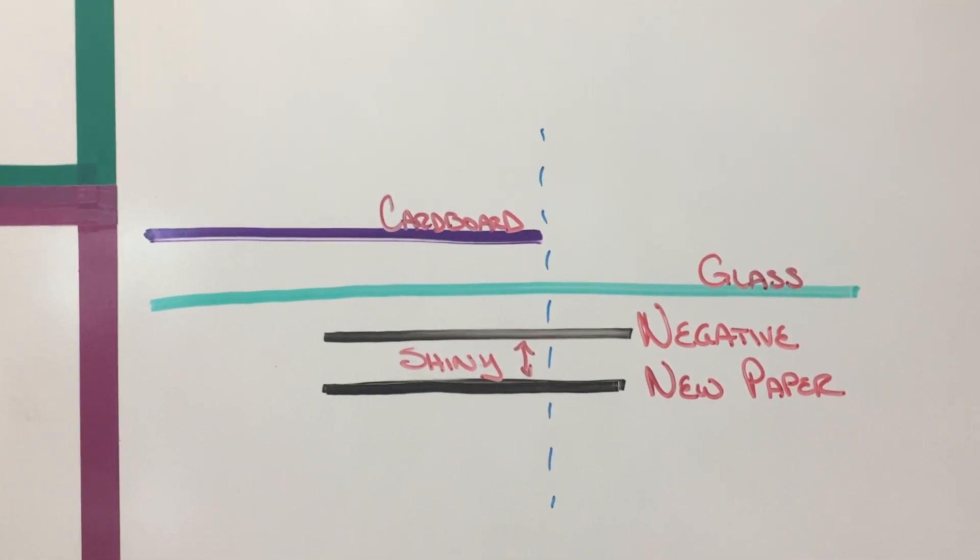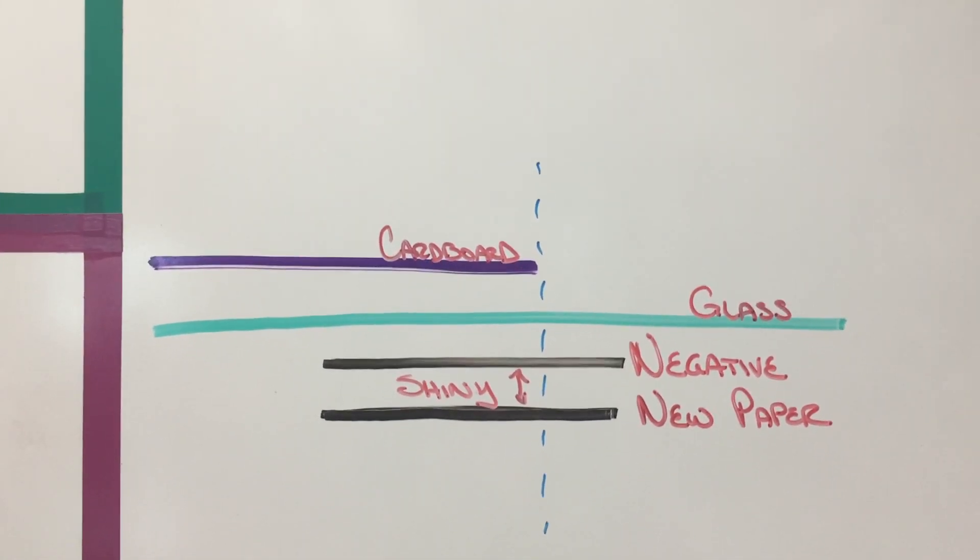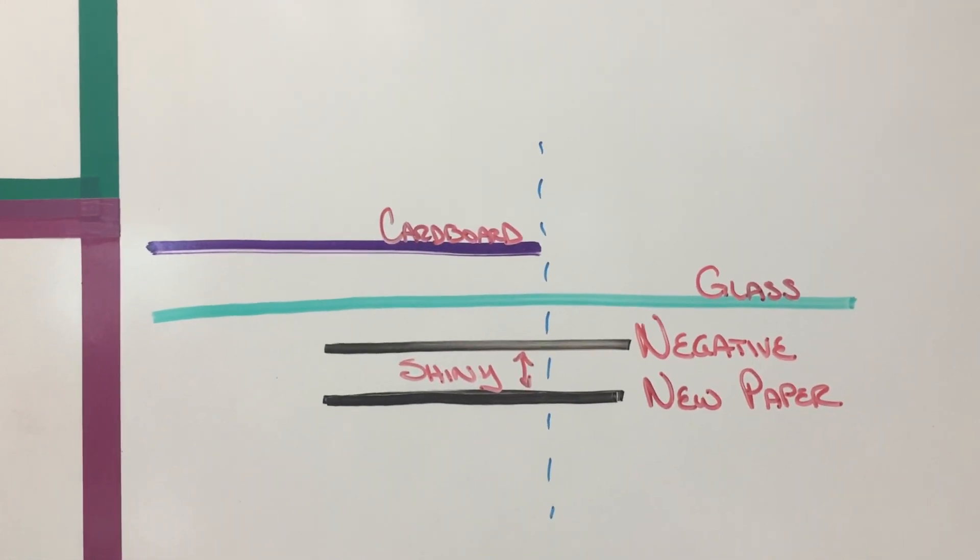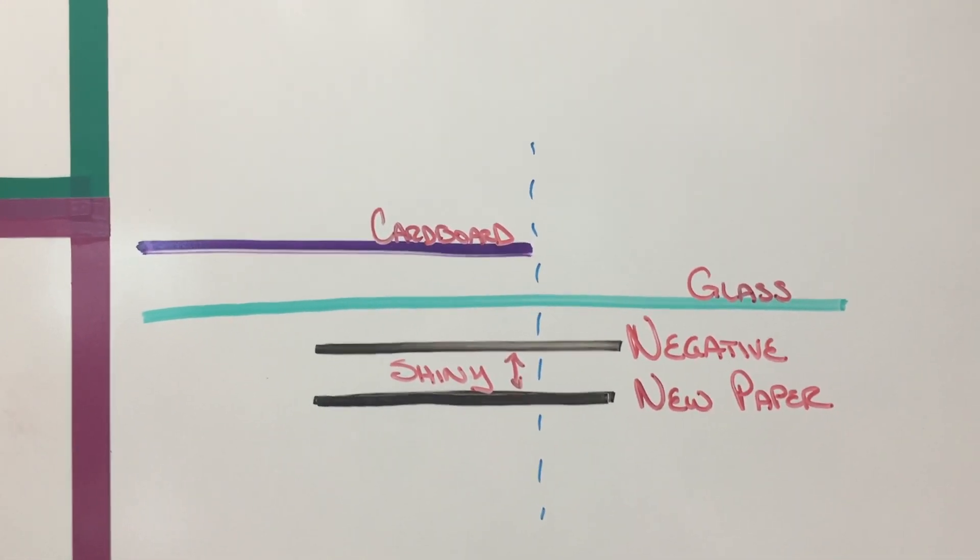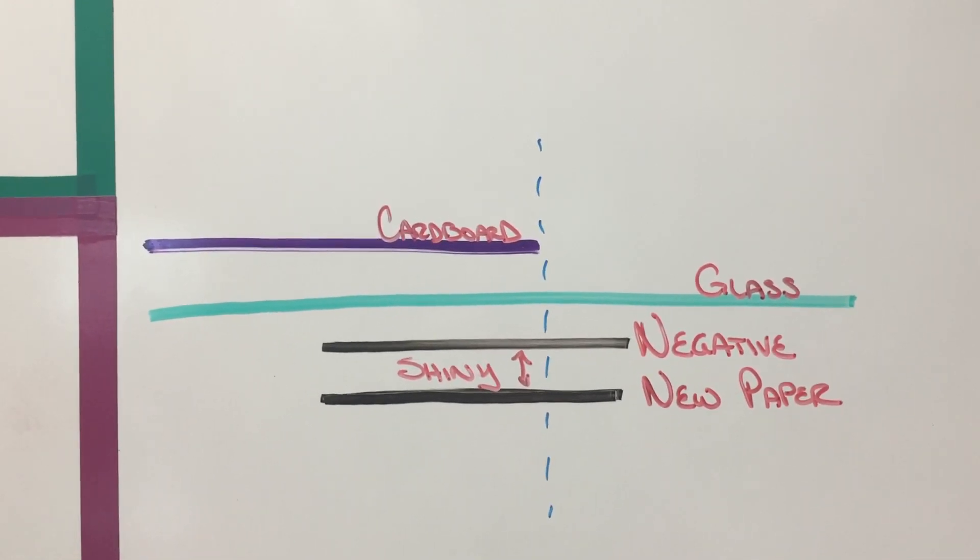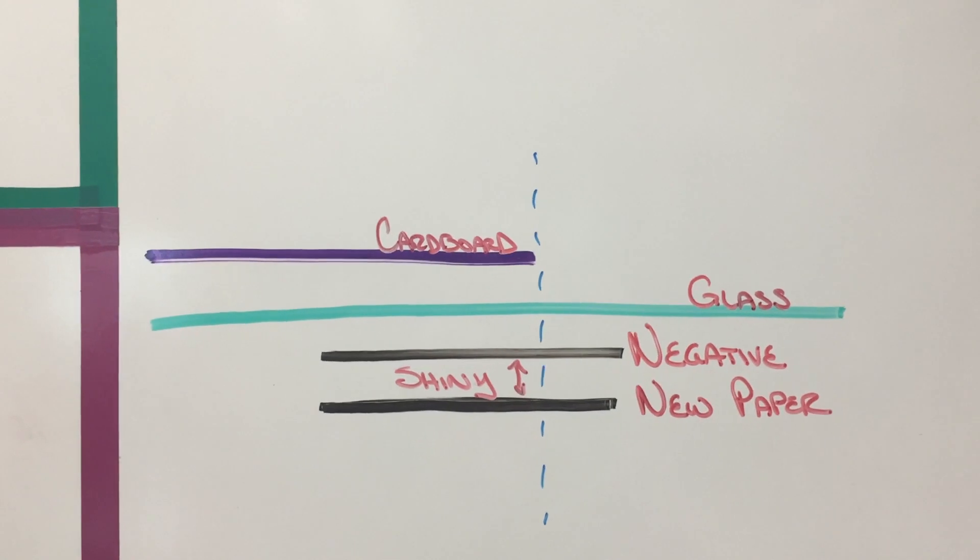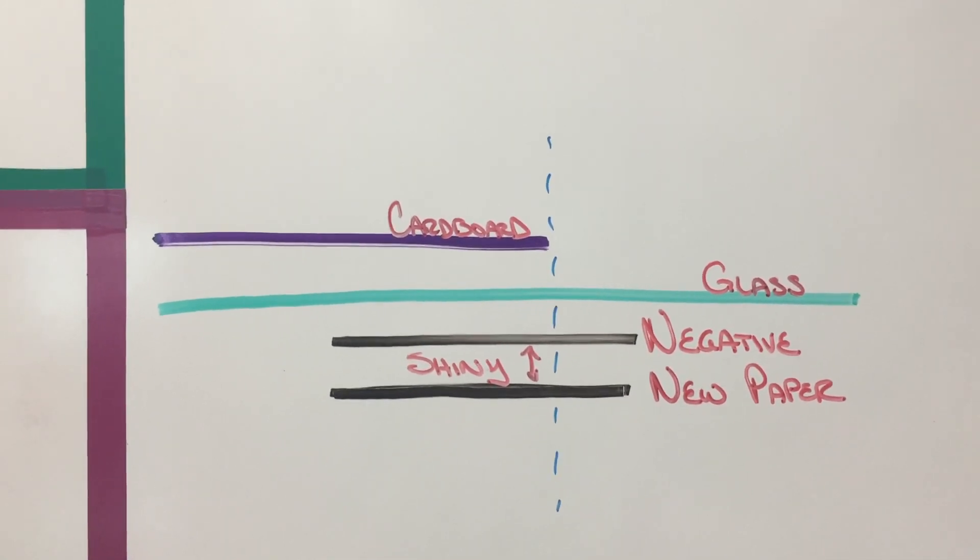So the glass is covering the whole thing and the cardboard is set off just a little bit so that you can expose one strip at a time. You will expose one strip, move it over again and expose the next strip and the next strip, making them all about an inch wide.